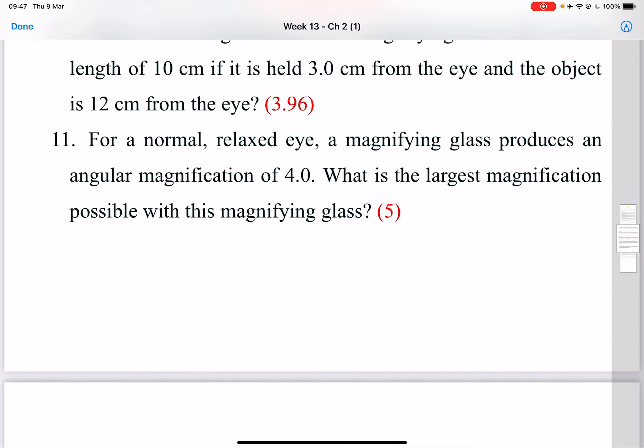Here we have problem number 11. For a normal relaxed eye, the magnifying glass produces an angular magnification of 4. What is the largest magnification possible with this magnifying glass? So we have to find maximum magnification, which is the largest one.